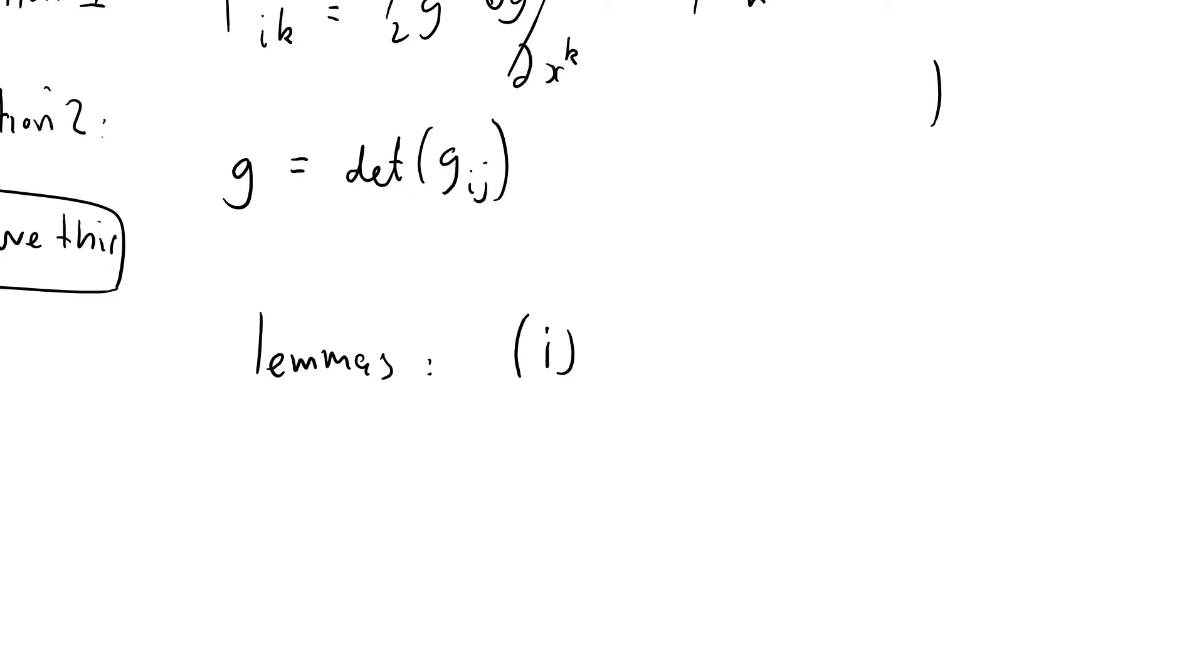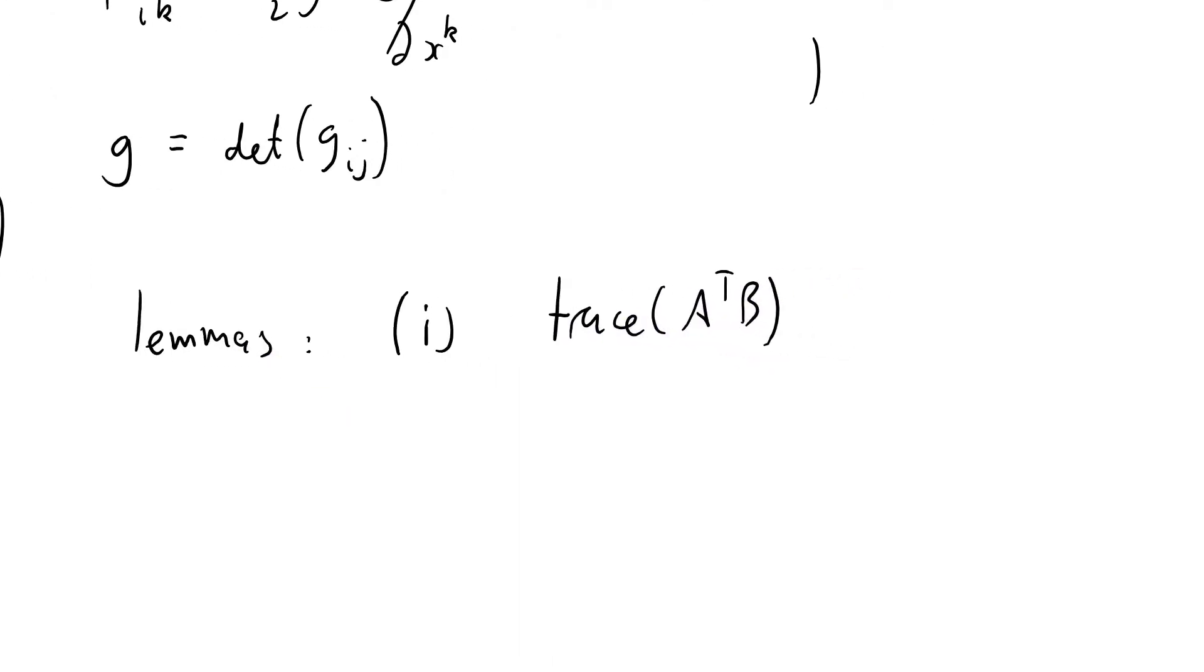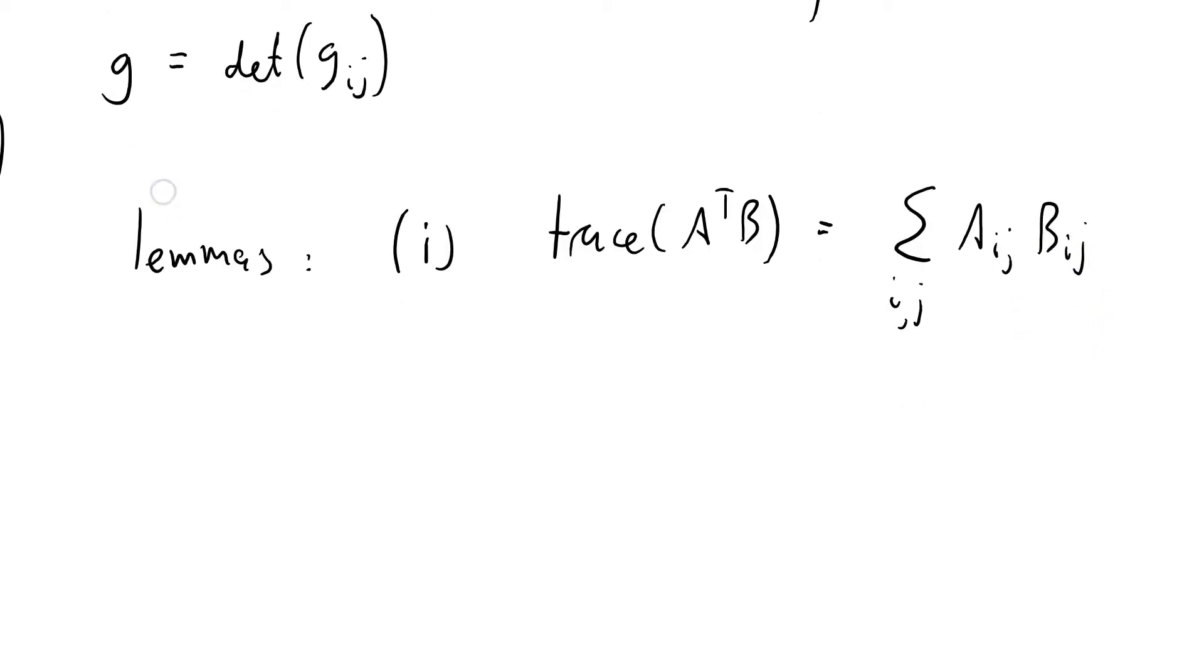It is that the trace of A transpose B equals sum over i and j of AijBij. And I'm going to prove that lemma.